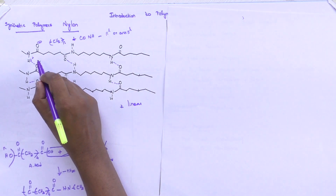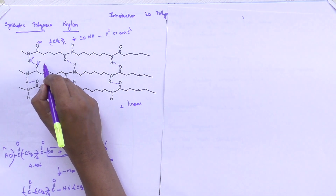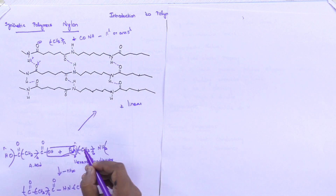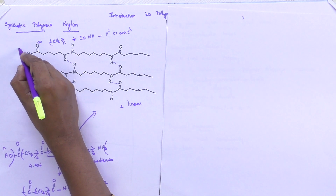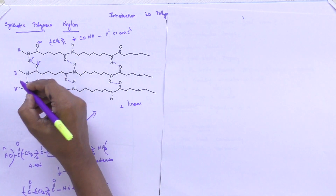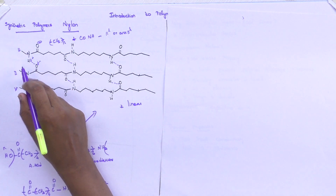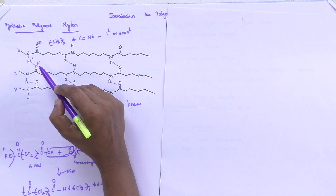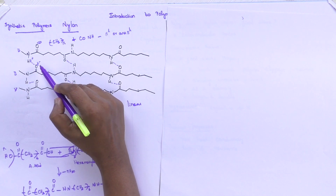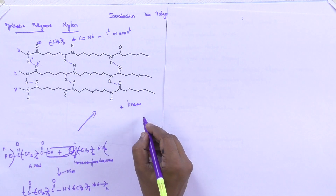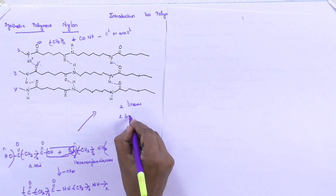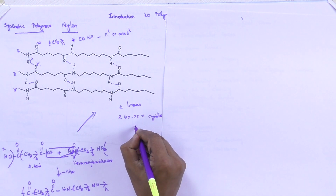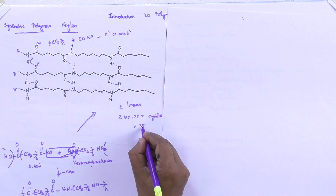Another important group is NH₂, which is found at the ends of the polymer. This NH₂ may also be found at the ends of the polymer if the polymer has an end. The main thing is you have the hydrogen bond which decides the polymer system. Also, if you take this, 65 to 75 percent of the structure is crystalline.